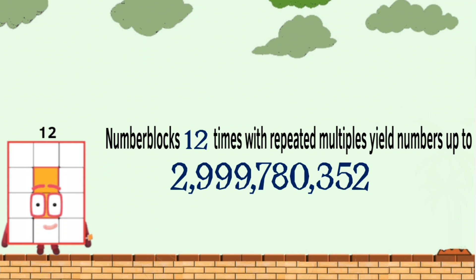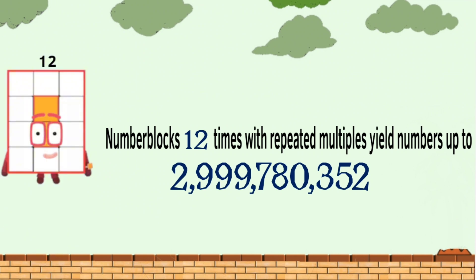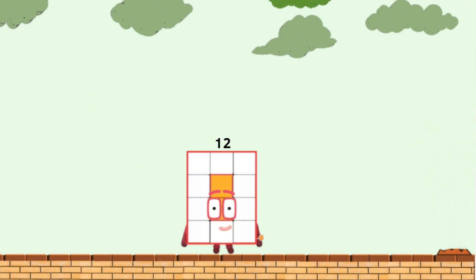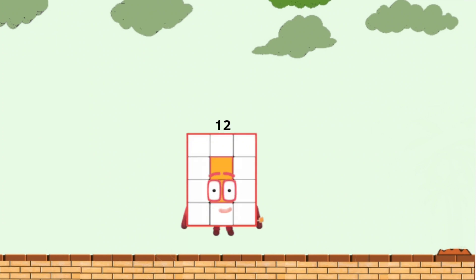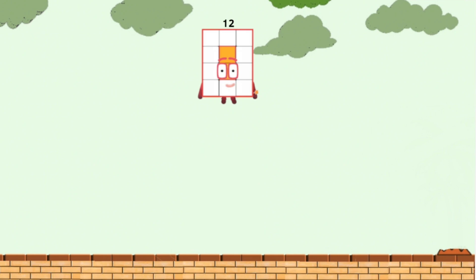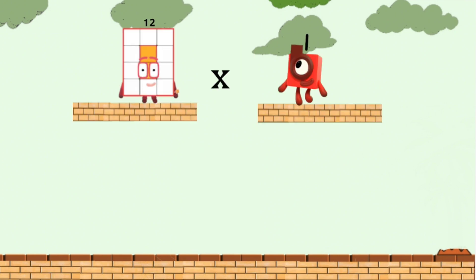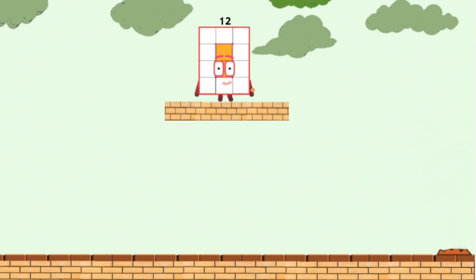Number blocks 12 times, with repeated multiples yield numbers up to 2,999,780,352. 12 times 1 equals 12.